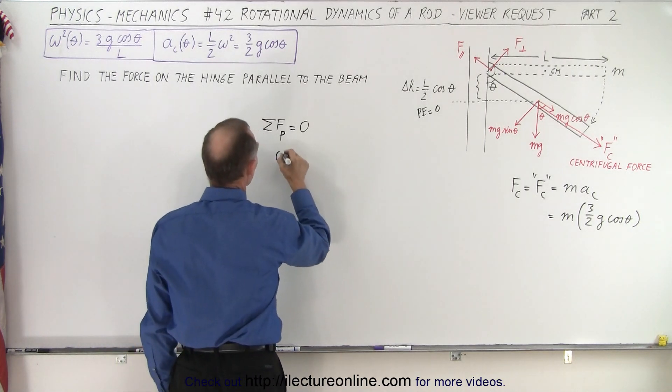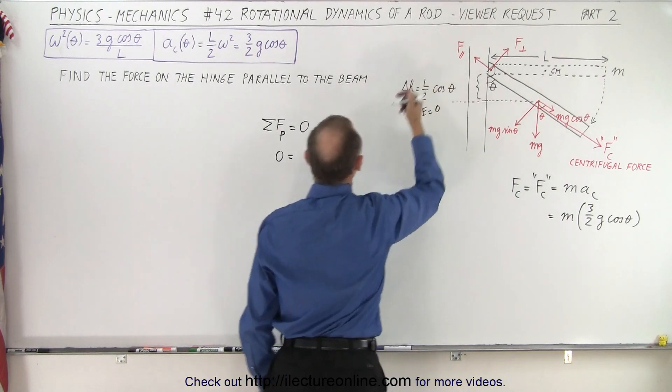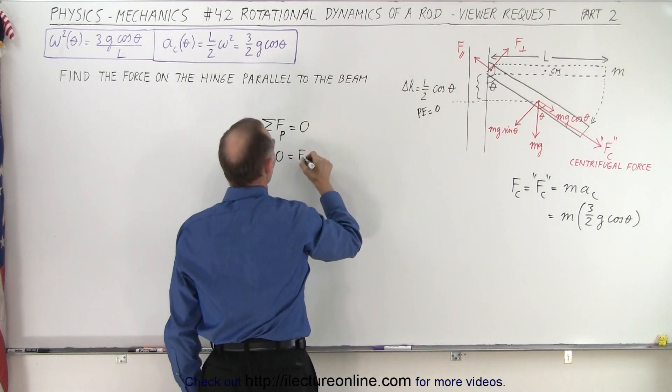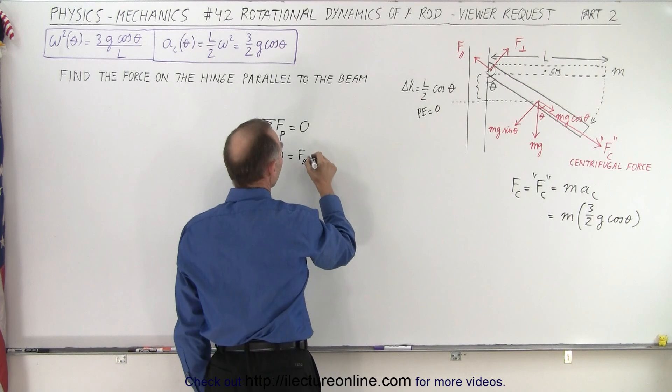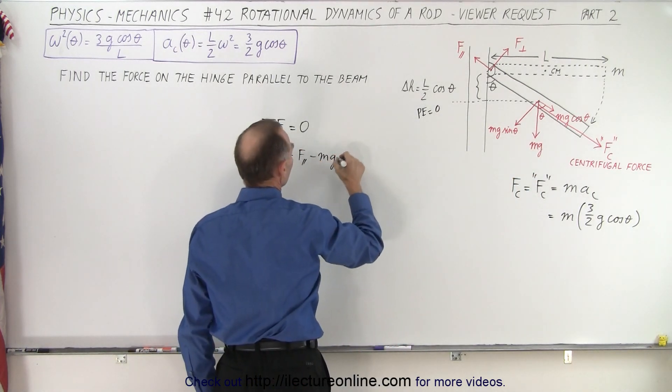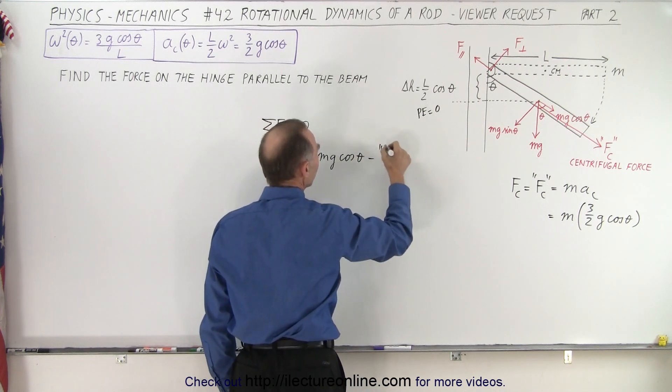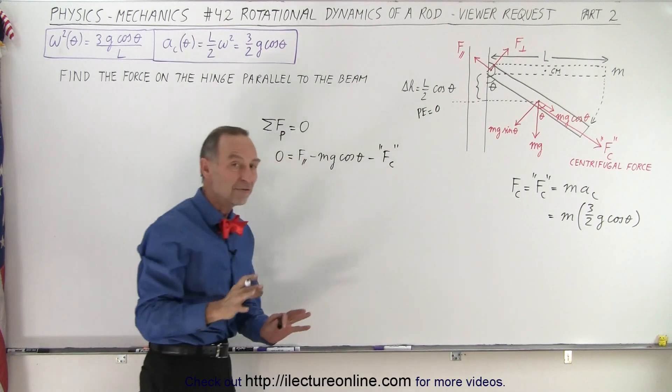So we know that zero is equal to, well first of all, let's call that the positive direction. So that's the force on the hinge in the parallel direction minus the mg cosine theta component and minus the centrifugal force. So again, we'll write it like this so you can see where that came from.